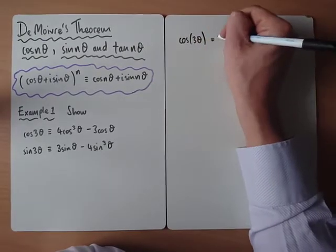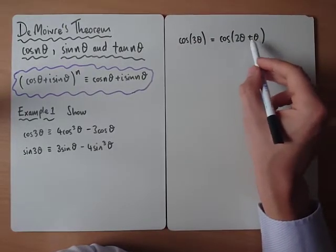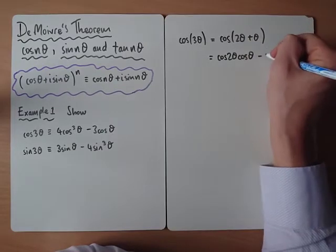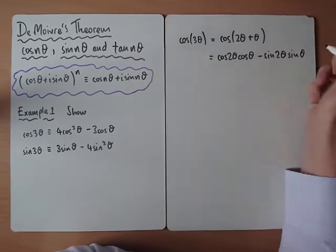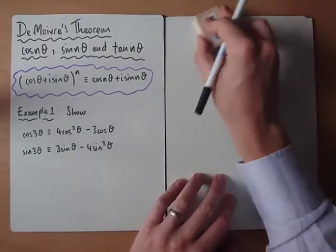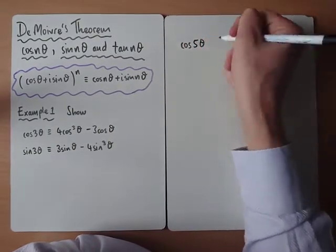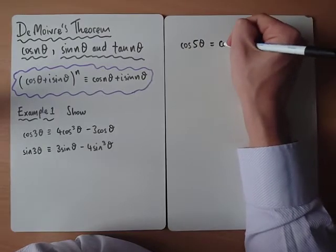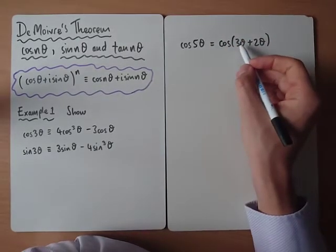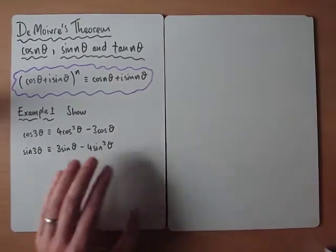We could use the cos(A + B) identity, getting cos 2θ cos θ − sin 2θ sin θ, then use the identities for cos 2θ and sin 2θ. But there's another way — imagine if you were trying to evaluate cos 5θ. Using the A-level technique would become a real algebraic mess, having to find an identity for cos 3θ and use compound angle formulas repeatedly. There's a much better way, which is what we're going to look at using De Moivre's theorem.